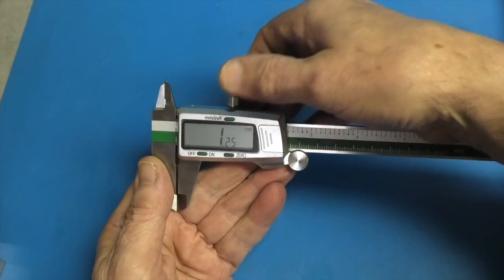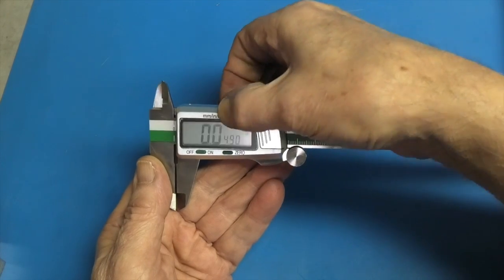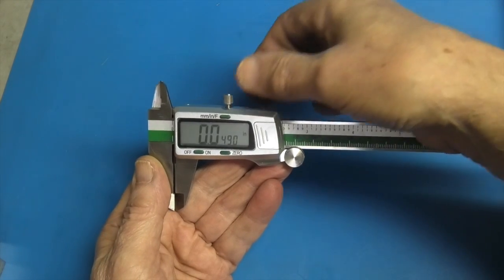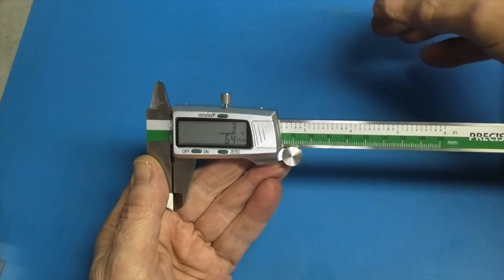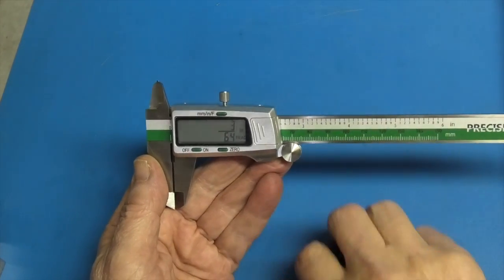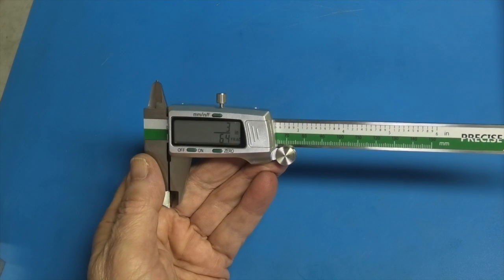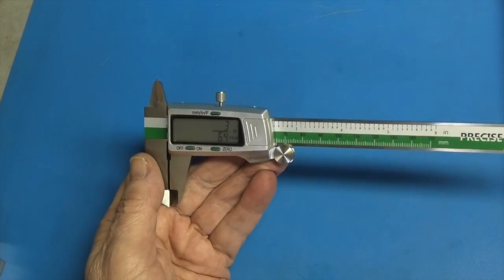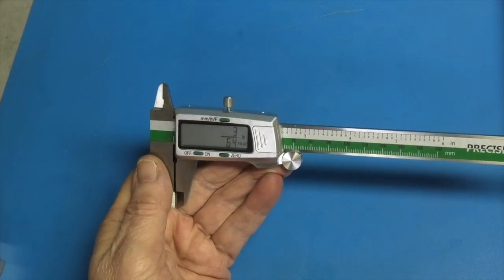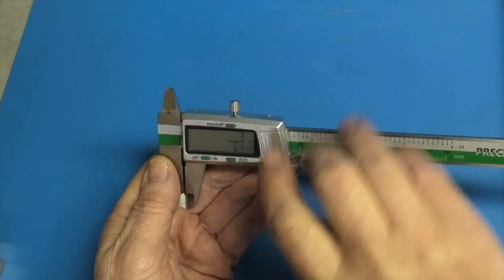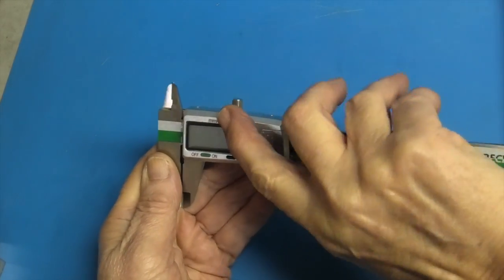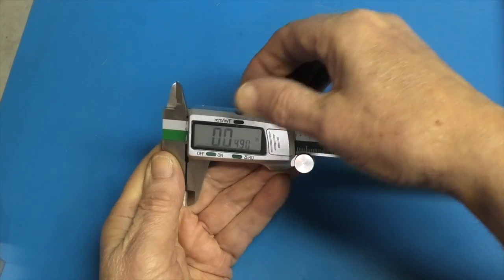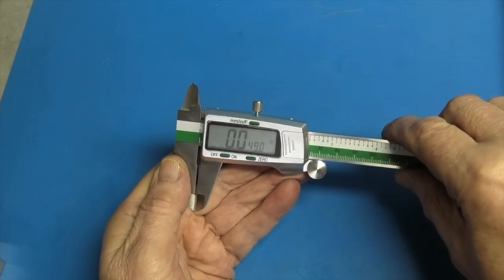Press it again. Millimetres. Inches. Fractions of an inch. It's made of stainless steel. The LED screen is easy enough to read.